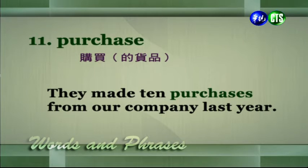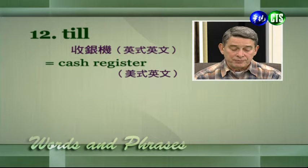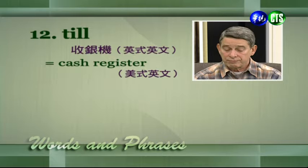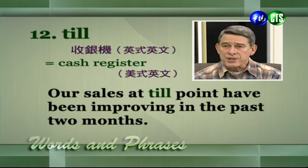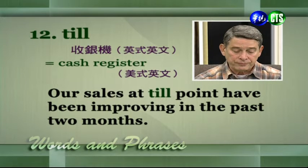Here is a word our students should be careful of. Many see the letters C-H-A-S-E and mispronounce "purchase" as "purchase" or "purchase". The correct pronunciation is "purchase" — the second syllable is light. As mentioned, it can be a noun or a verb. Till — 收銀機，這是英式英文，美式英文通常說 cash register。Our sales at tillpoint have been improving in the past two months. 過去兩個月，我們的現場零售業績一直在進步。